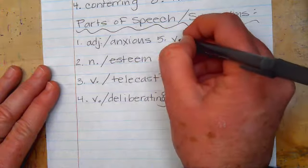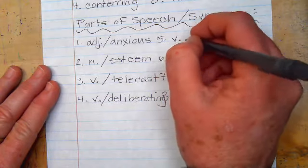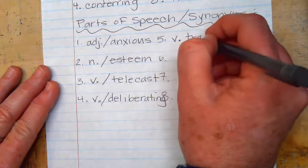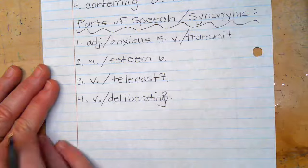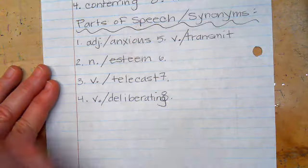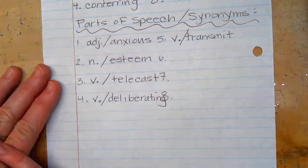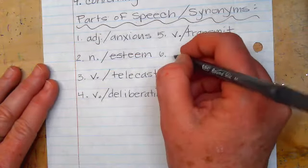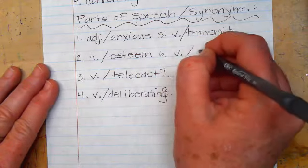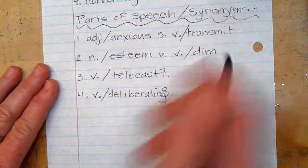Number five is convey. That's definitely a verb. Convey means transmit. Number six is fade, and fade is a verb, and my synonym is dim.